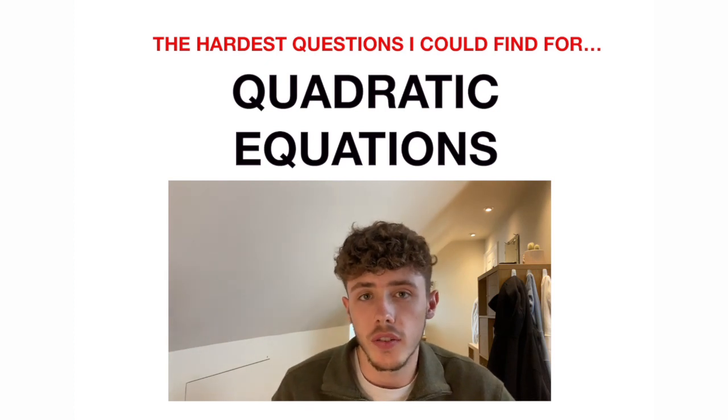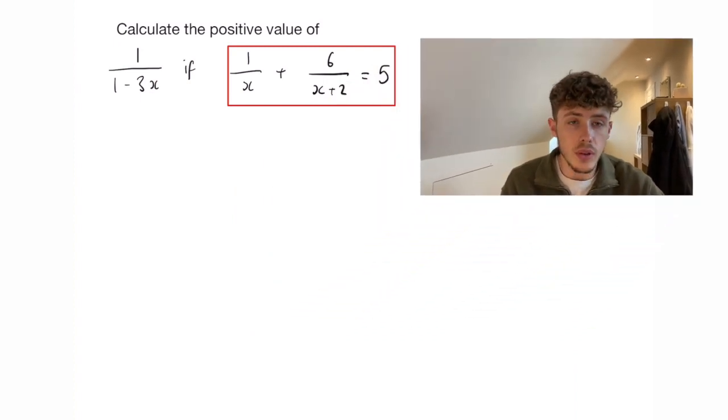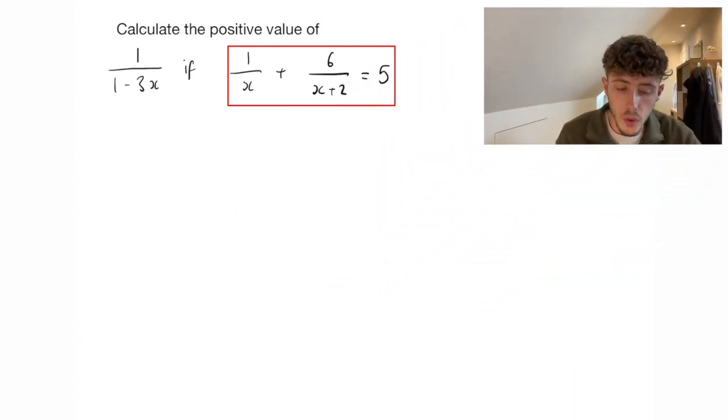The hardest question I could find for solving quadratic equations. Calculate the positive value of 1 over 1 minus 3x if 1 over x plus 6 over x plus 2 is equal to 5.